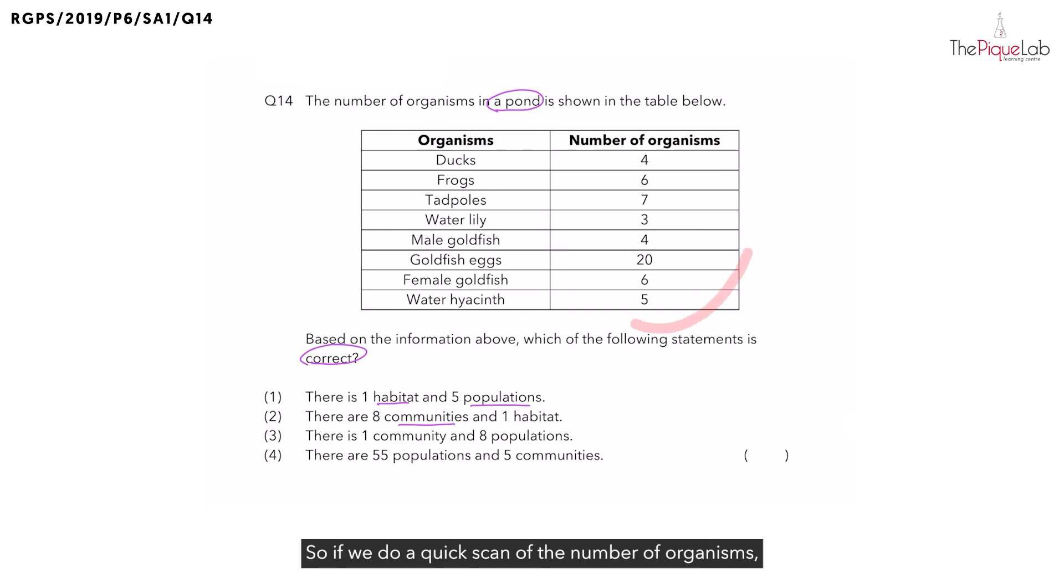So, if we do a quick scan of the number of organisms, all the numbers are more than one. So, let's begin counting the number of populations. Let's start with four ducks. Now, the four ducks, that is the first population. So, I'm going to put a number one with a circle to indicate that's population number one.